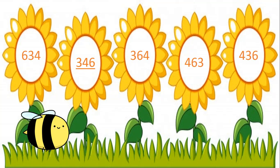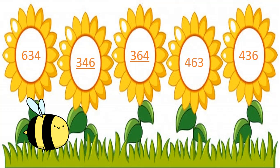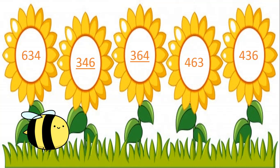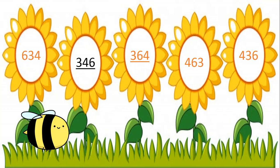That is 346 and 364. When the digits in the hundreds place are the same, let's see the digits in the tens place. That is 4 and 6. Which digit in the tens place is the smallest? Yes, 4. So the number 346 is the smallest number here. I hope my kids now you have understood how to find out the smallest number.